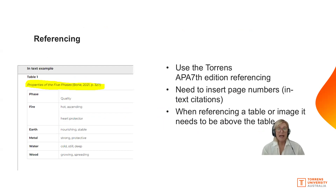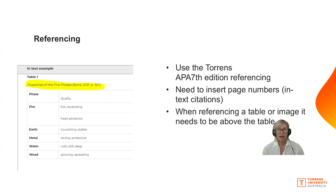How to reference tables and figures is where a lot of students go wrong. In APA 7 Torrens edition, the table always has a heading — Table 1 and then the name — and the reference is just underneath that heading, before the table itself. Previously it was placed below the table; it is now above. The same applies if you reference a figure or picture — the reference must be above.